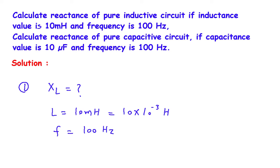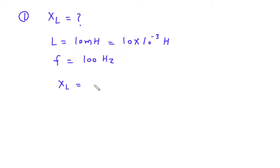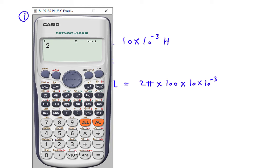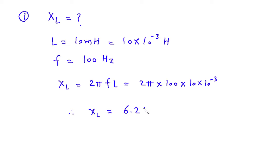From this we can find the value of XL, because XL is equal to 2πFL. So this will be 2π multiplied by F which is 100, multiplied by L which is 10 into 10 to the power minus 3. So XL is equal to 6.283. Since it is inductive reactance, its unit will be Ohm.